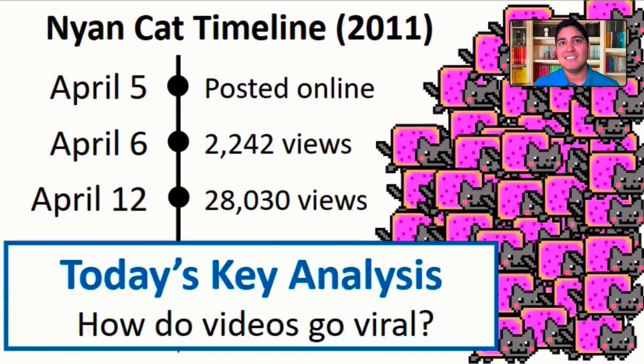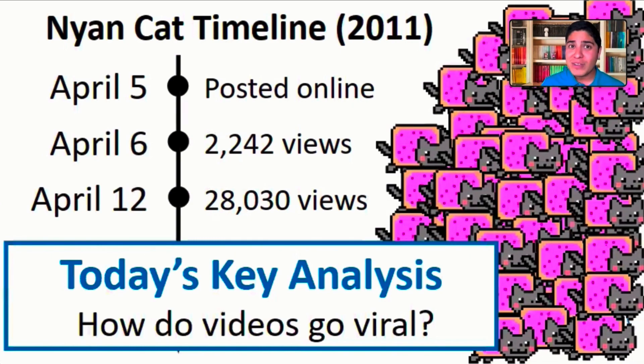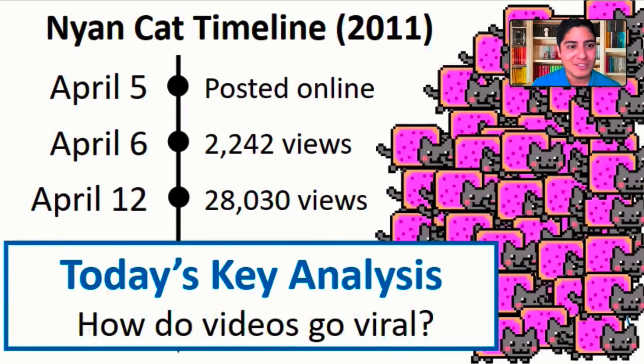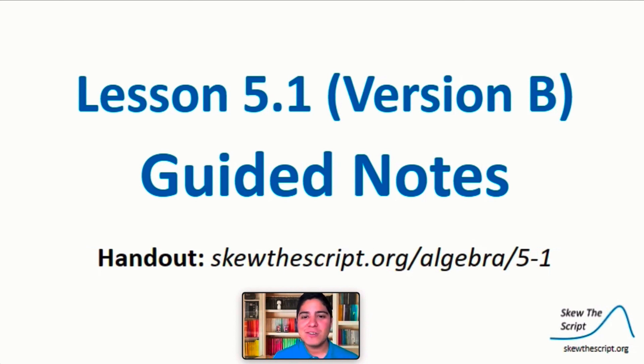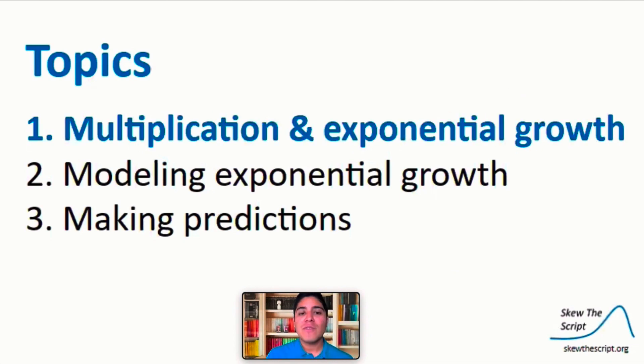So today's key analysis is how do videos go viral? We're going to figure out how a silly one-minute video goes from one view to 204 million views. You can follow along today using the guided notes that are linked in the video description below. Now in this video, we're going to focus on three things. First, let's start with multiplication and exponential growth.